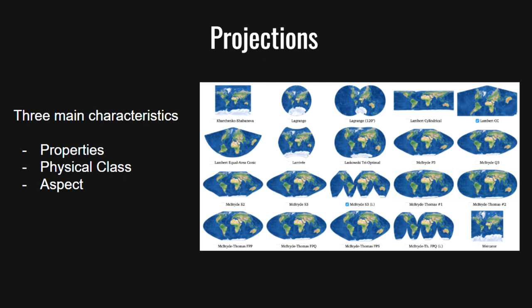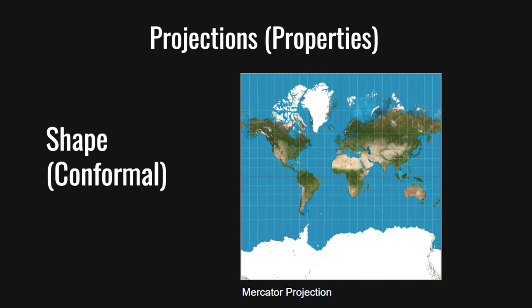When it comes to map projections, there are three main characteristics to consider: its properties, physical class, and aspect. The property of a map projection describes what property it is conserving. For example, we can conserve shape, meaning that all shapes on the map will be correct on a conformal projection.